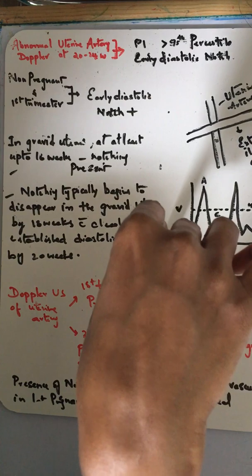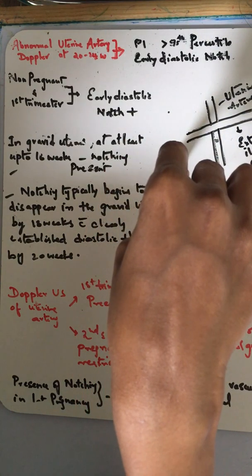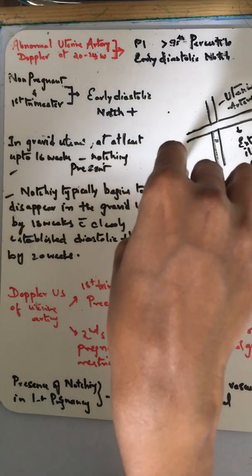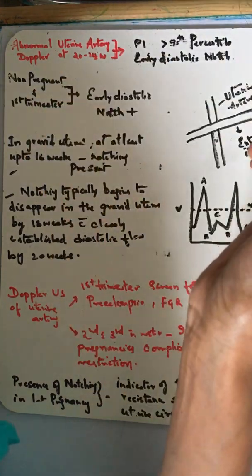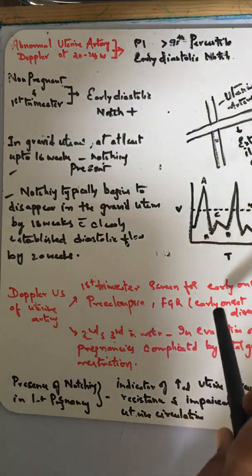At 13 weeks, the PI at the 50th percentile will be 1.5 and the 95th percentile will be 2.3. If it is more than 2.5 or more than 2, it's screening positive for preeclampsia.